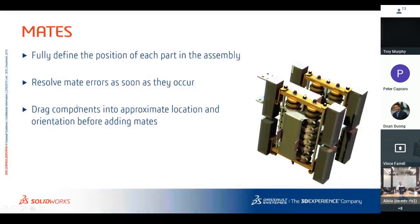Something I used to teach in classes: drag components into an approximate location and orientation before adding mates. This has improved significantly since SolidWorks 2017, where clicking the two surfaces now allows SolidWorks to flip them correctly. But in general, get components as close as possible before mating. If you don't, SolidWorks has to guess — sometimes it's right, sometimes it's wrong — and you could end up with funky or unnecessary mates.